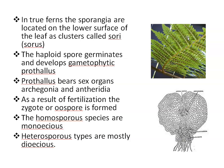The haploid spore is the unit of the gametophyte. On germination, the spore develops into a gametophytic prothallus. The gametophytic plant is called prothallus since it more or less looks like the thallus of a primitive bryophyte. The prothallus bears sex organs — archegonia and antheridia.